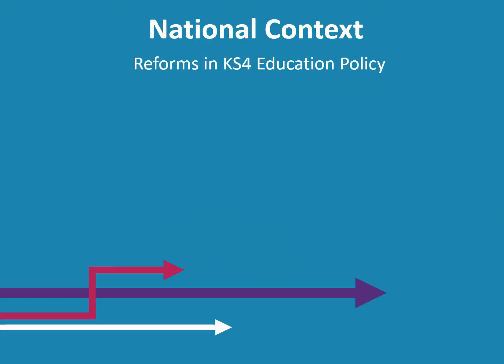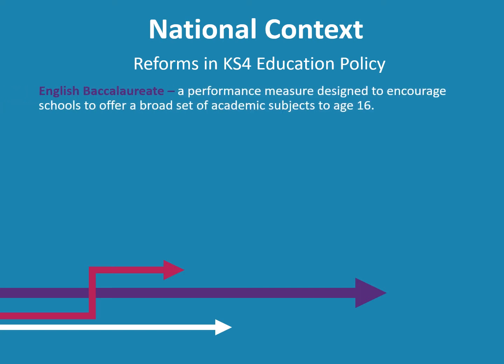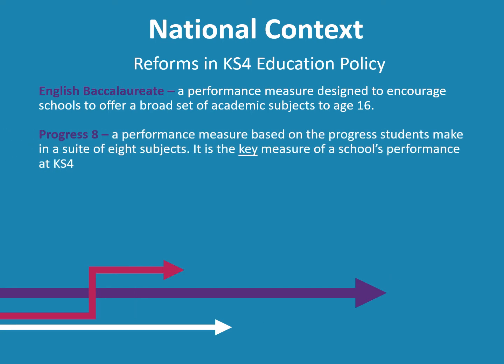The recent reforms in education policy at Key Stage 4 have affected all secondary schools throughout the country. The main reforms include the introduction of the English Baccalaureate — a school performance measure designed to encourage schools to offer a broad set of academic subjects to the age of 16 — and the introduction of Progress 8, another school performance measure based on the progress students make in a suite of eight subjects, which is the key measure of a school's performance at Key Stage 4.